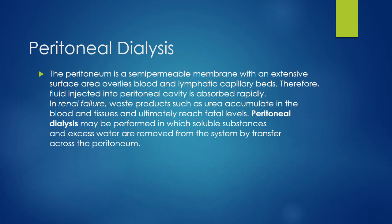The peritoneum is a semi-permeable membrane with an extensive surface area and it overlies the blood and lymphatic capillary beds. Therefore, if fluid is injected into the peritoneal cavity it is absorbed rapidly. In case of renal failure, when waste products such as urea accumulate in the blood and tissues and reach fatal levels, peritoneal dialysis may be performed. This is one method of dialysis — the other is hemodialysis. In peritoneal dialysis, soluble substances and excess water are removed from the system by transfer across the peritoneum.